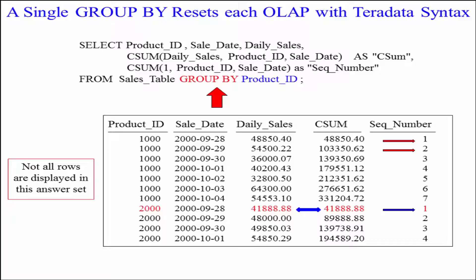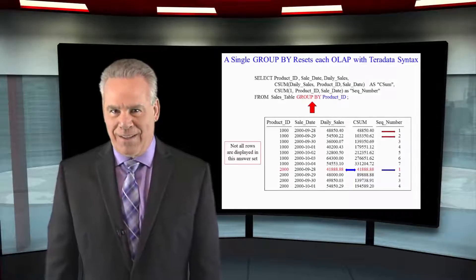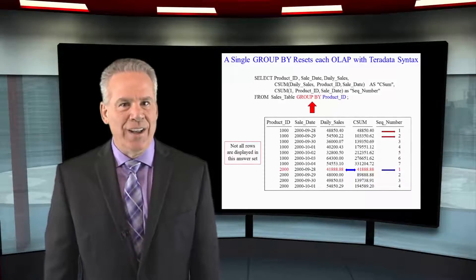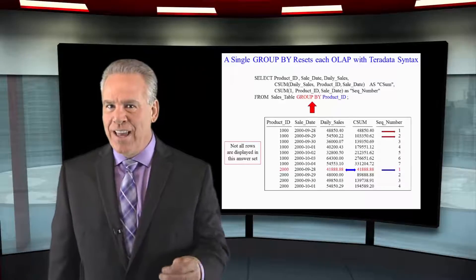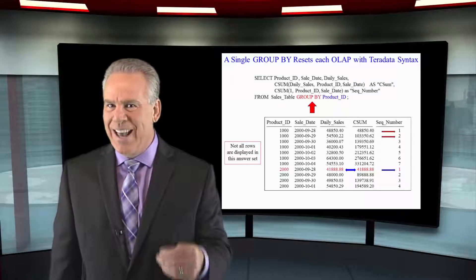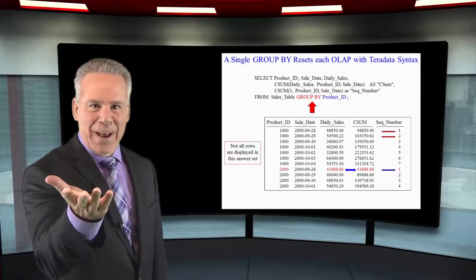Notice that both ordered analytics reset when the Product ID changed from 1000 to 2000. Congratulations, but let's do better in the future. I want you to mark this down in your mind — this is great that I can have resetting, but with ANSI I'm going to do something even more amazing, and that's why I want you using the ANSI version of this. We'll see that here in just a few seconds. Don't be scared, friends — I got you.